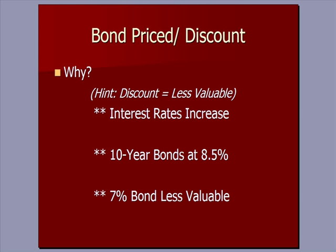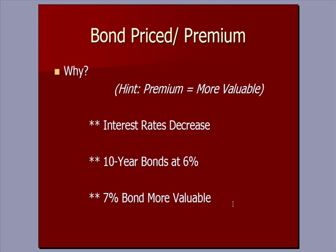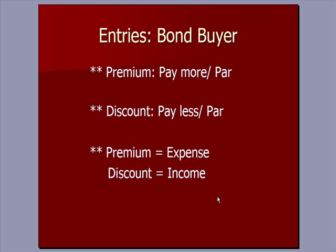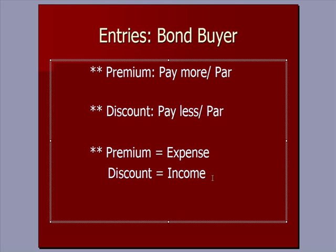To wrap up, why would a bond be purchased at a discount or a premium? Discount implies something is less valuable. If interest rates increase and we can now buy a 10-year bond at 8.5%, the 7% bond would be less valuable — priced at less than $1,000 — and the market would demand it be priced at a discount. The opposite is true for a bond priced at a premium: interest rates decrease, and 10-year bonds are now offered at 6%, less than 7%, so the 7% bond is more valuable and should be priced at a premium — something more than $1,000. In summary: premium means you pay more than par; discount means you pay less than par. The premium to an investor becomes an expense; the discount to an investor becomes income.